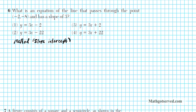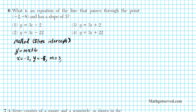The slope-intercept form of the equation of a line is y equals mx plus b. For this problem, x is going to be equal to the x-coordinate which is negative 2, y is going to be the y-coordinate which is negative 8. We already know that the slope m is 3, but we have to find b, so we'll put a question mark for b.